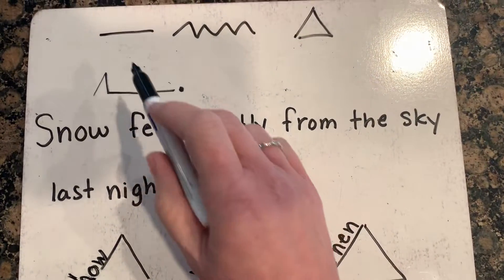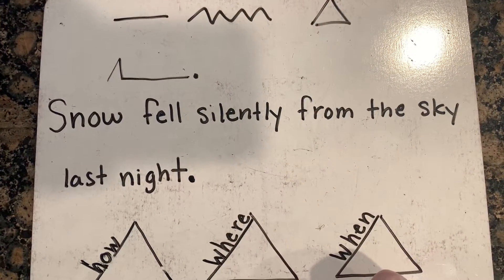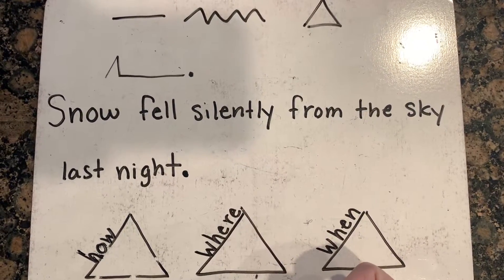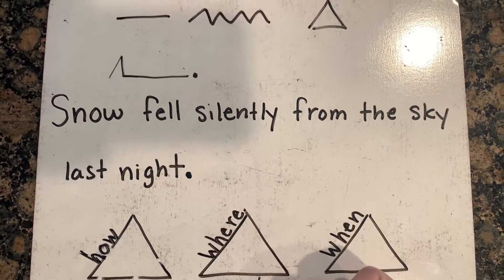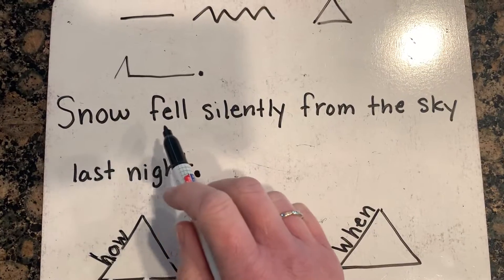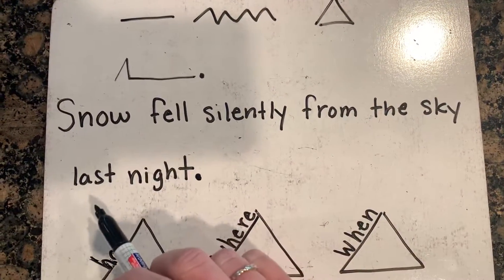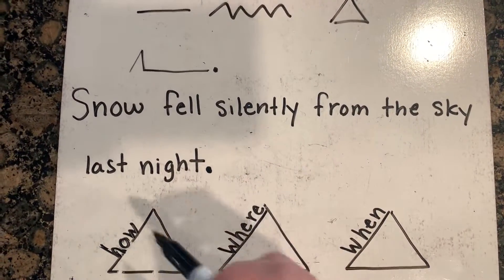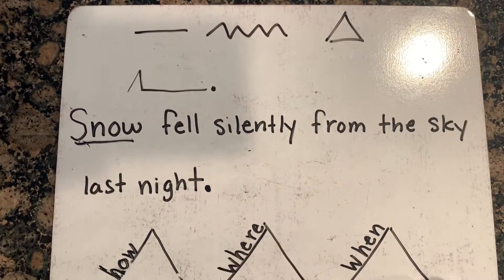Let's start with our who or what is this sentence about. That is our subject. It is going to be a noun - a person, place, or thing. Today our sentence says, snow fell silently from the sky last night. Oh, I wish it did. We had rain though. I would love to have snow. Snow is what our sentence is about. That is the what in our sentence.